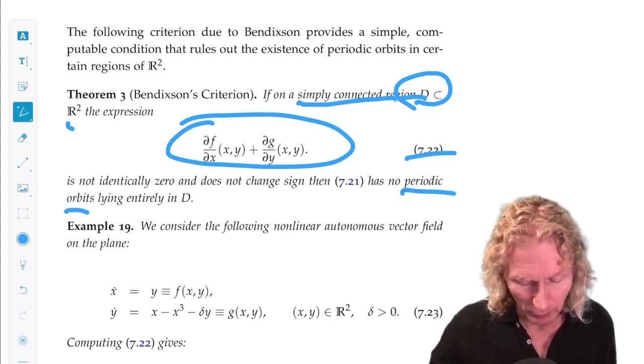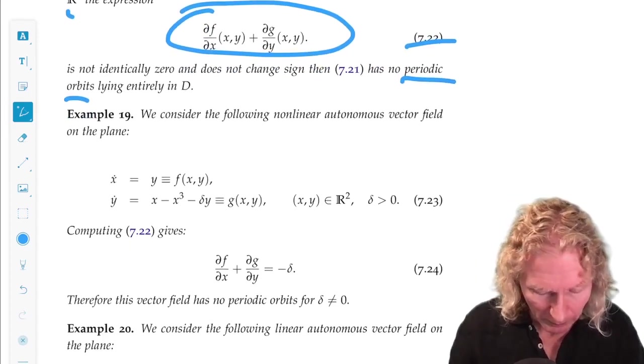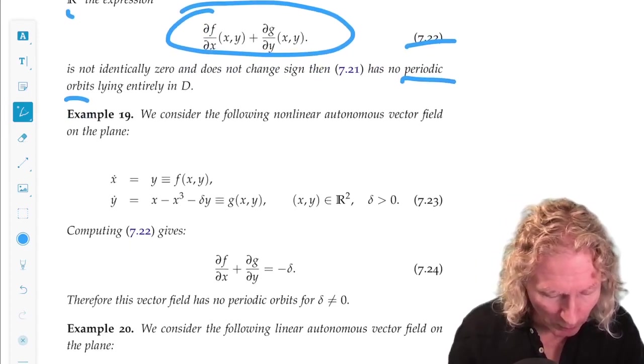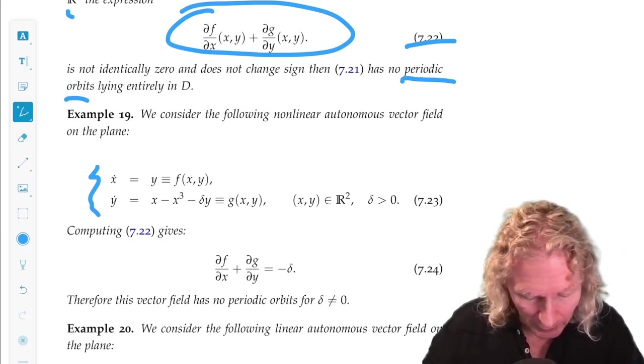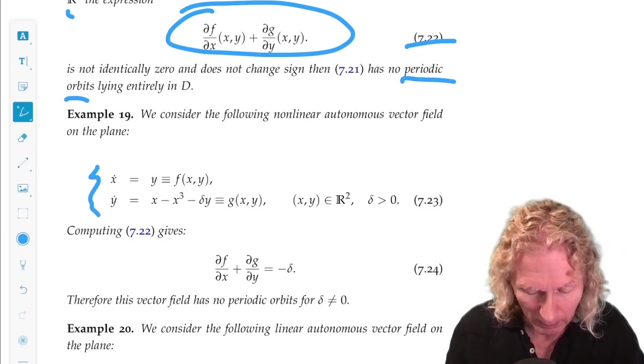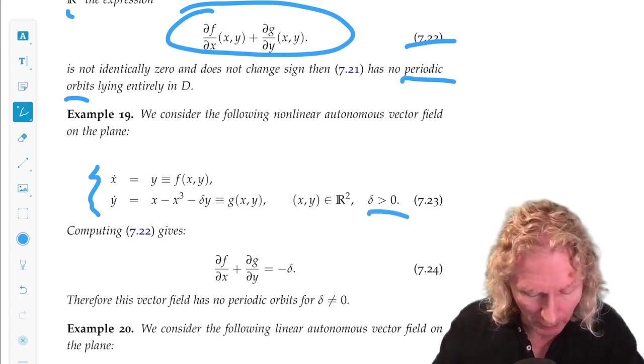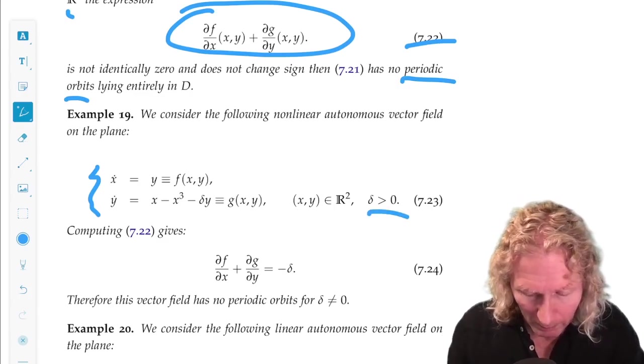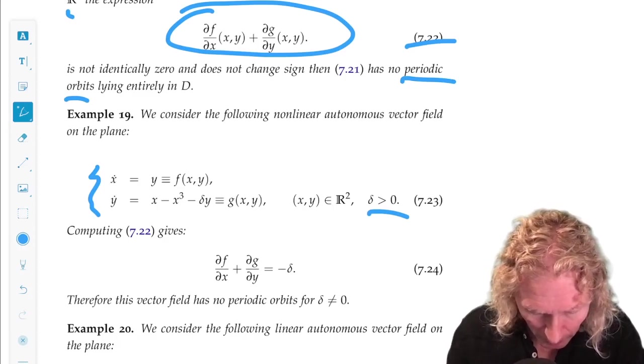So let's look at two examples. We know this example from the last chapter and from the Lyapunov principle. And now I'm assuming delta is strictly greater than zero. So we compute this quantity and what do we get?